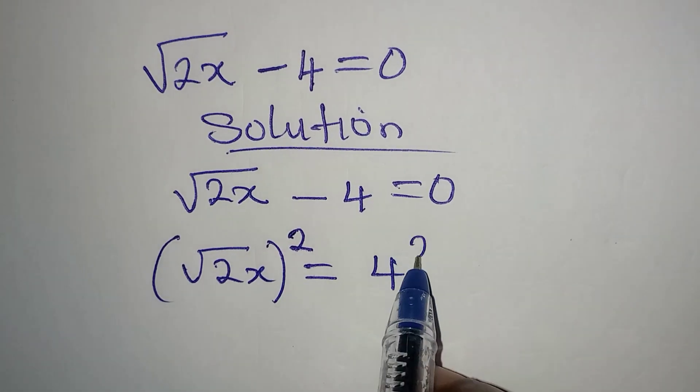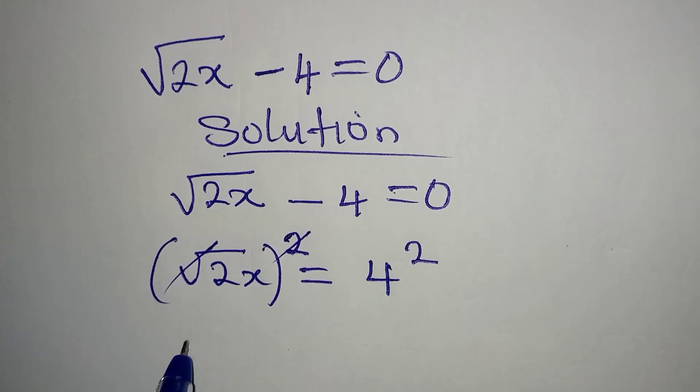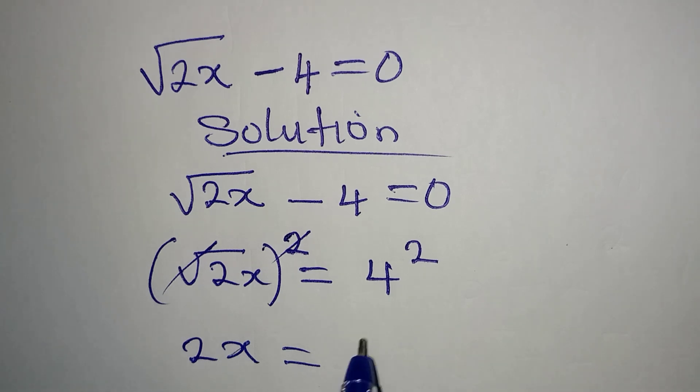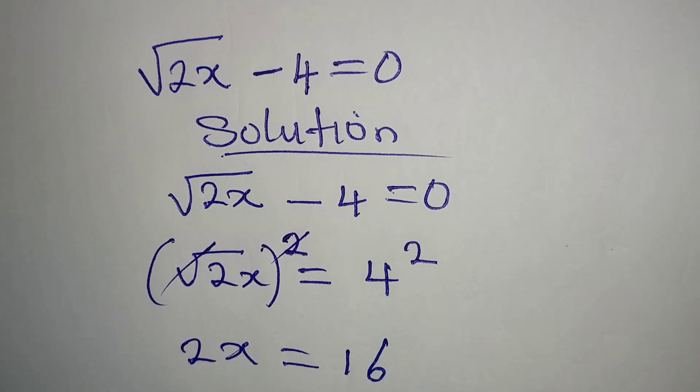Now 2x is equal to 4 squared, which is 4 times 4, and it is 16.